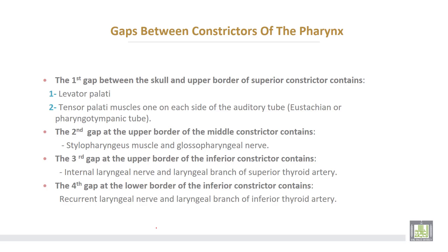The gaps between the constrictors of the pharynx: the first gap is between the skull and the upper border of the superior constrictor, and contains the levator palati muscle and tensor palati muscle, one on each side of the auditory or Eustachian tube. The second gap is at the upper border of the middle constrictor and contains the stylopharyngeus muscle and glossopharyngeal nerve.